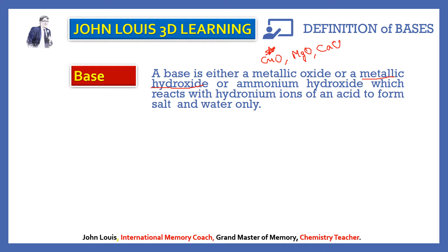The second type is metallic hydroxide. For example, magnesium hydroxide has the formula Mg(OH)₂ because magnesium has valency 2 and hydroxide has valency 1 — when you interchange we get Mg(OH)₂. Aluminium hydroxide is Al(OH)₃ because aluminium has valency 3 and hydroxide has valency 1 — when you interchange we get Al(OH)₃.